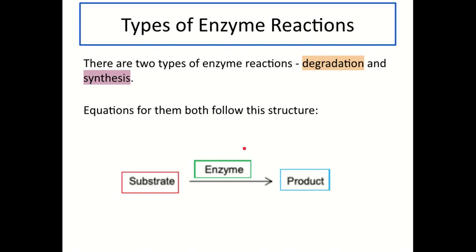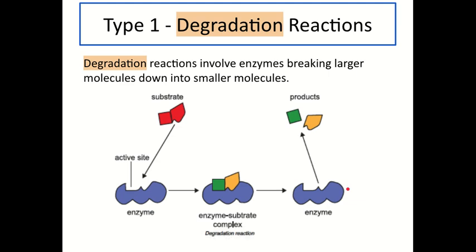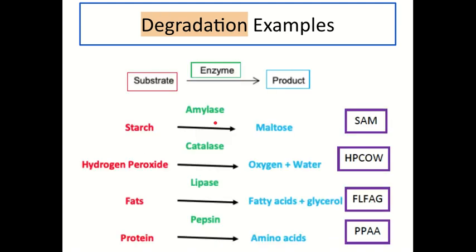Now we know the stages of an enzyme reaction, we're going to look at the two types of enzyme reactions: degradation and synthesis reactions. Equations for both still follow the structure substrate-enzyme-product. Degradation is our first type and involves enzymes breaking larger molecules down into smaller molecules. You can see that in the diagram — a single large substrate binds to the enzyme's active site, forming the enzyme-substrate complex, and then two smaller products are released.